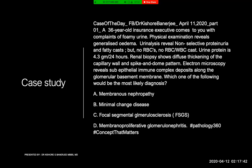Urinalysis reveals non-selective proteinuria — meaning not only low molecular weight proteins like albumin are being leaked by the kidney, but also larger molecular weight proteins are leaked out. There is also the presence of fatty casts, but no RBCs, no RBC or WBC casts. Protein is 4.3 grams per 24 hours, which is more than the cutoff limit for nephrotic-range proteinuria, which should be more than 3.5 grams per 24 hours.